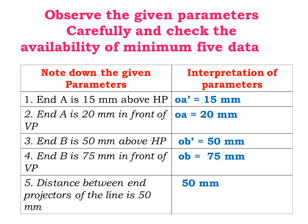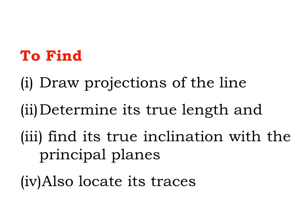Parameter 5. Distance between end projectors of the line is 50 mm. To find: draw the projection of the line, determine its true length, find its true inclination with principal planes, also locate its traces.